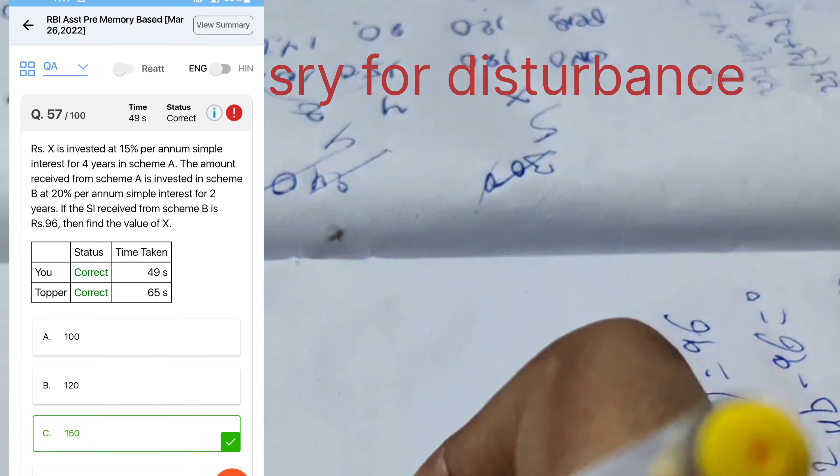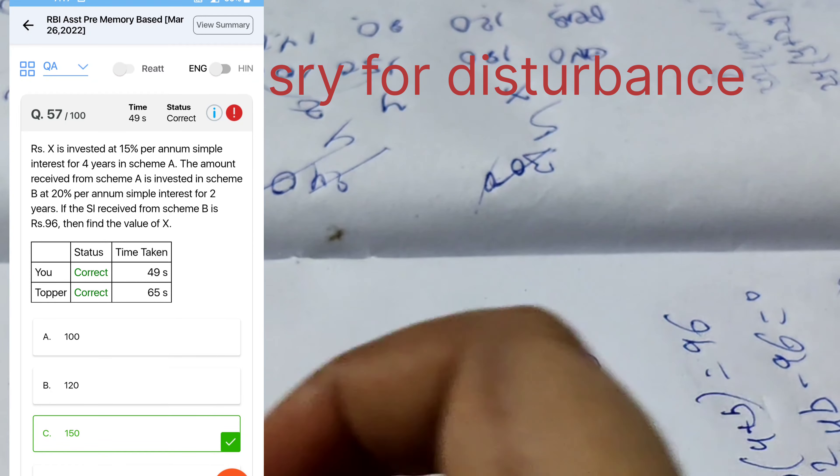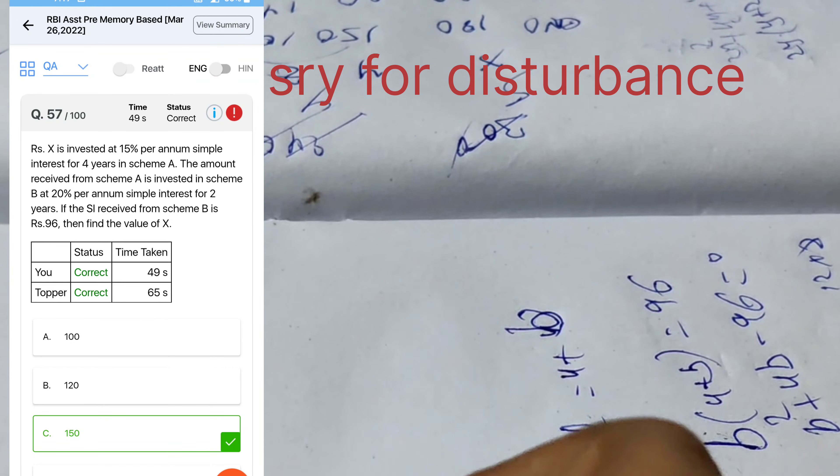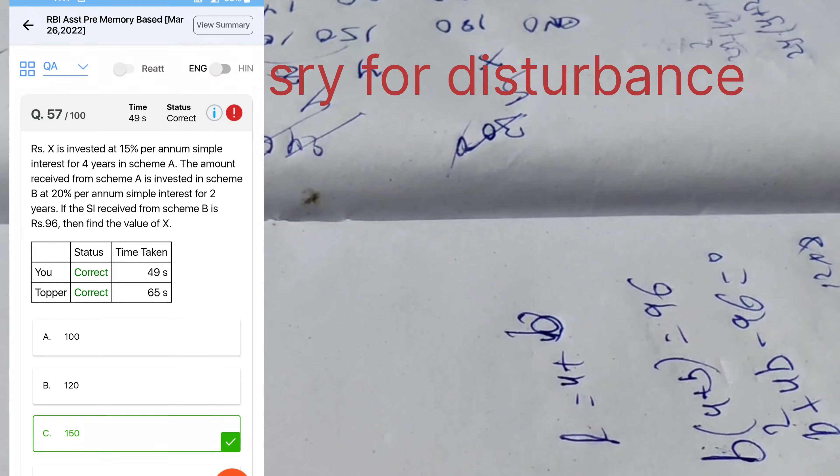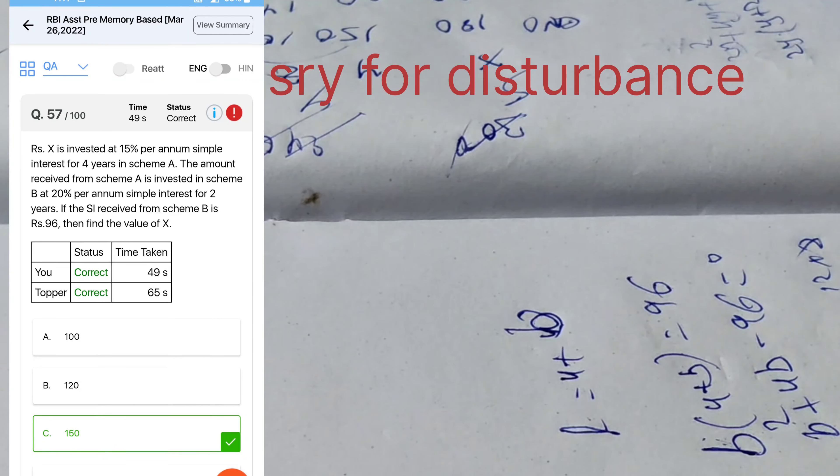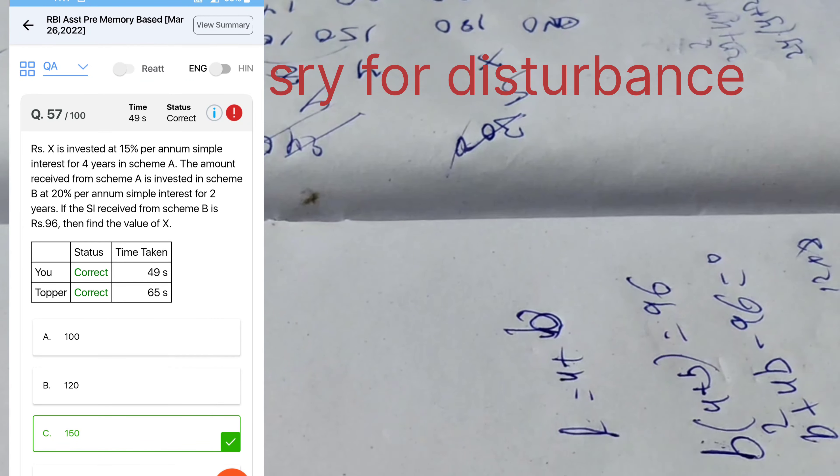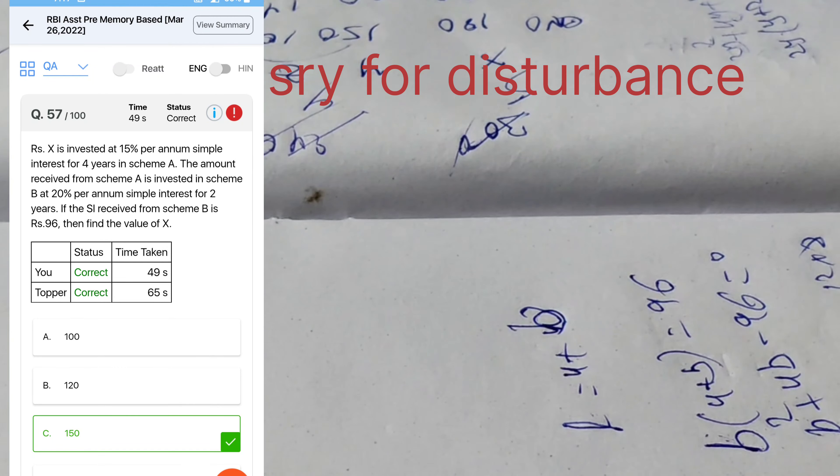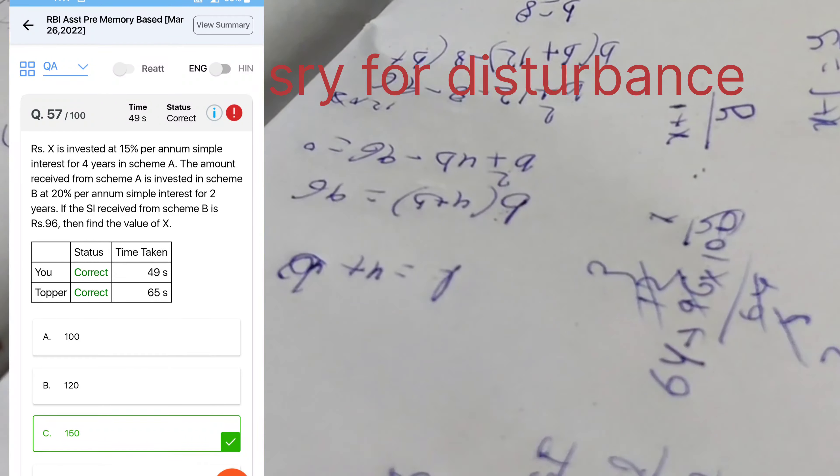Next question, x is invested 15 percent per annum simple interest 4 years in your scheme A, and the amount received from A is invested in B. So I think, for suppose we will start with 100x. So 60x is simple interest and 100x, 160x is again invested B, again for 20 percent simple interest for 2 years. So this is cancelled for 64. So I received 96, 32 to 64. And what, I find the value of x is 64. So 2x3 is 150.